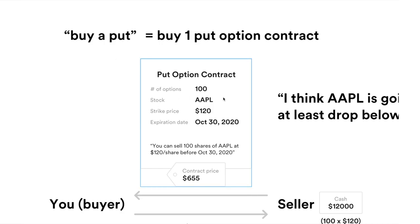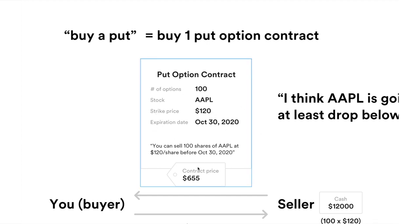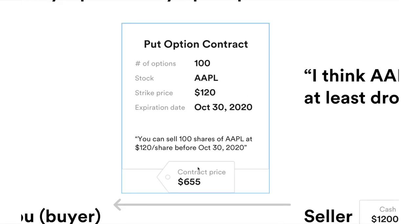The contract also defines the stock, the strike price, and the expiration date. So by having this put option contract, what you can do with it is that you can sell 100 shares of Apple at the strike price of $120 before the expiration date. But you might ask: how do you sell exactly?